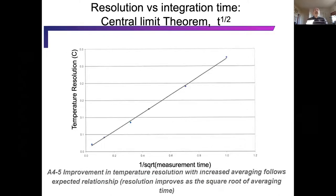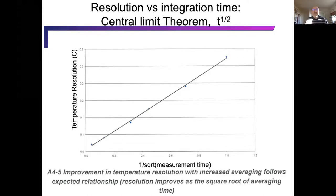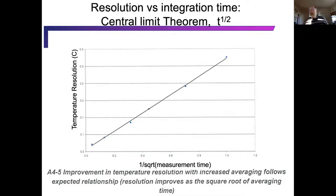With respect to temperature resolution, we are really counting photons. When we hold our instrument open for a minute of collection, we get a rate of photon collection. The uncertainty of the mean rate of photon collection goes with the square root of time — from standard large-number statistical concepts. Temperature resolution as a function of one over the square root of measurement time is very linear, confirming the central limit theorem works. A one-second measurement will be roughly 10 times less accurate than a 100-second measurement.